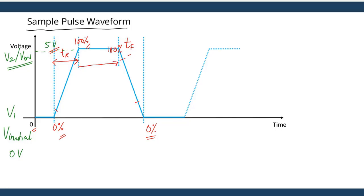Next, let's understand the parameter called on time. The on time is the time for which the waveform maintains the voltage level V2 — that is, five volts in our case. It is this flat portion of the waveform at voltage level V2.